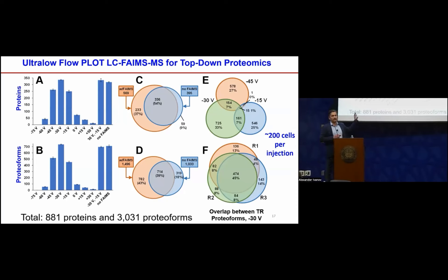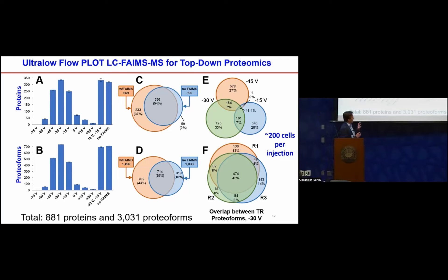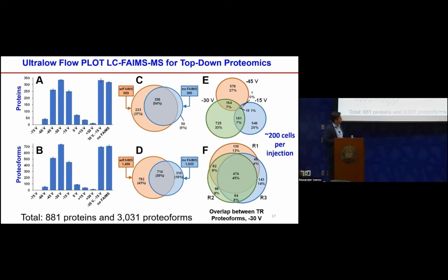Comparing ion density maps with and without the FAMES interface, as expected, polysiloxane ion streaking is removed, single-charge contaminants and ions are removed, and the ion density maps and signal-to-background noise are cleaned up significantly. Optimization of compensation voltages provided gains of 45% and 35% for proteins. For 200 cell-equivalent injections, replicates looked good with good overlaps, yielding around 1500–1900 proteoforms from 200 cells — a promising start.